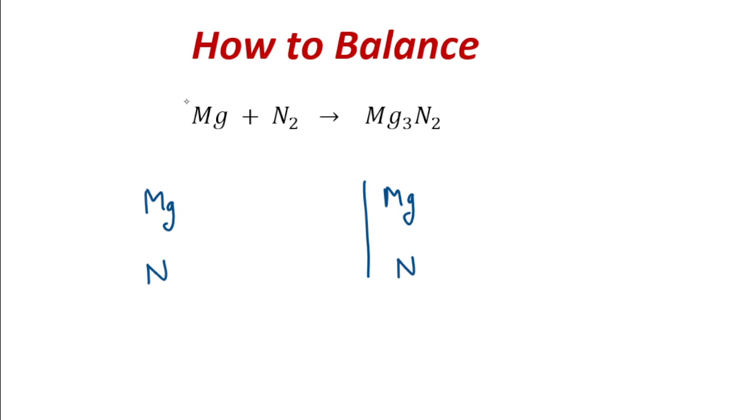In reactant side magnesium is 1, because no coefficient is there and no subscript is here, and nitrogen is 2. And product side magnesium is 3 and nitrogen is 2.